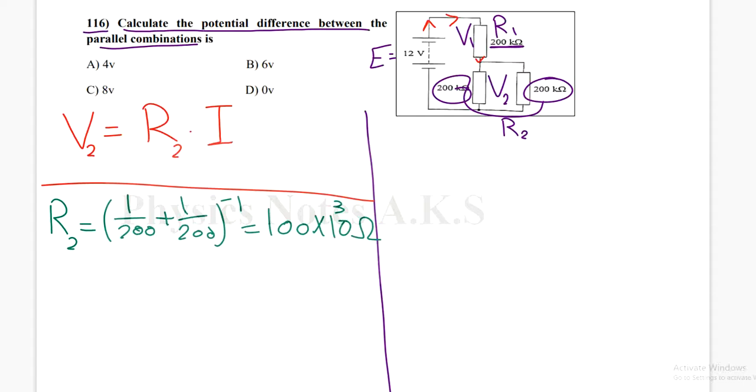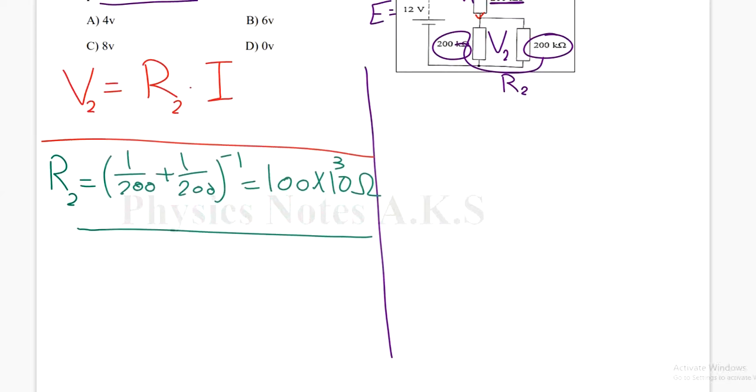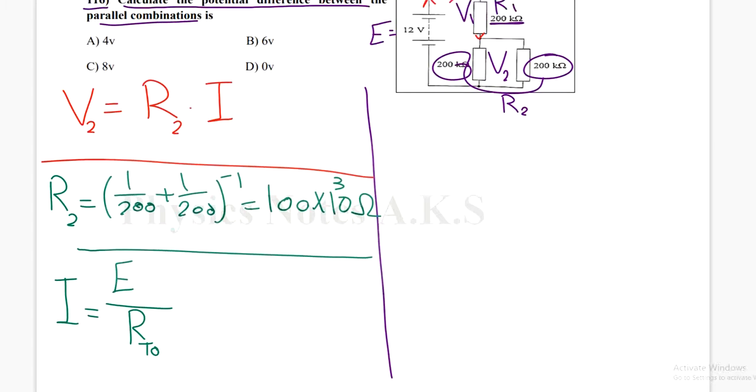Now, the current I. How to find the current I? I is equal to the electromotive force of the battery over the total resistance.